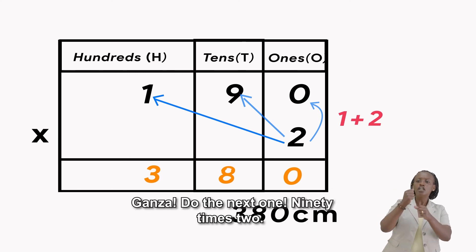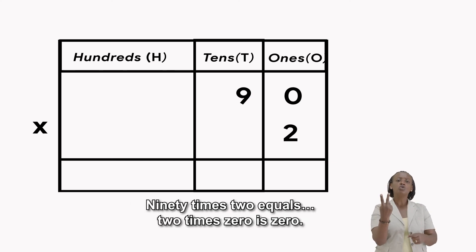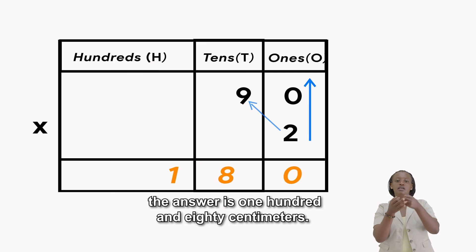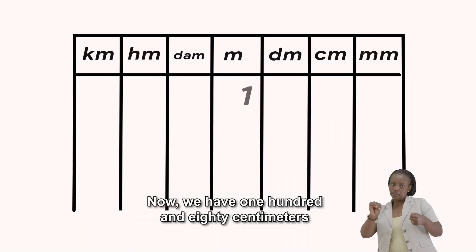Ganza, do the next one. 90 times 2: 2 times 0 is 0, 2 times 9 is 18. The answer is 180 centimeters.